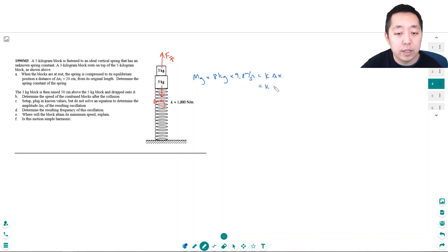Now the delta x they tell you is 20 centimeters, that's 0.20 meters. So k is equal to eight kilograms times 9.8 meters per second squared divided by 0.20 meters. So this is 392 newtons per meter, so this is the spring constant.